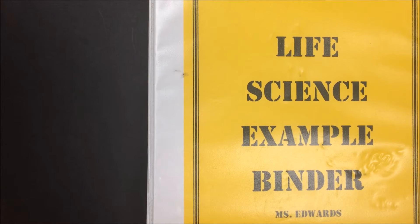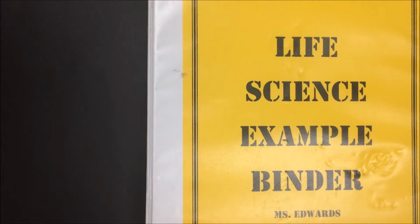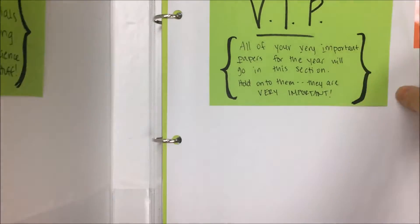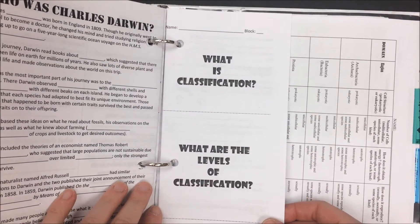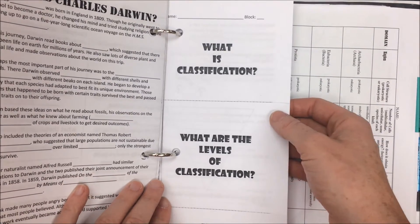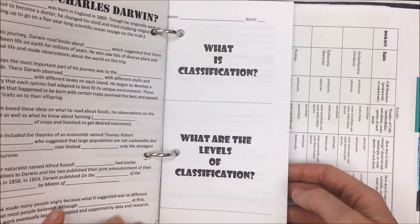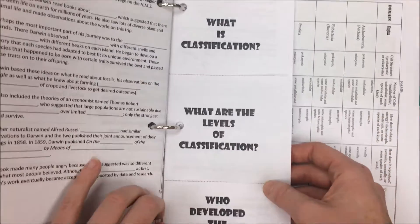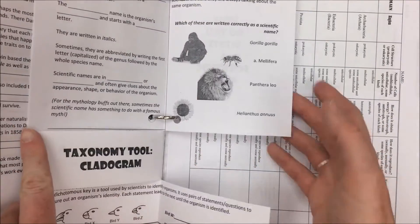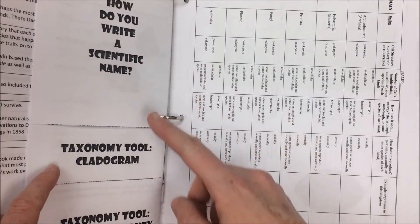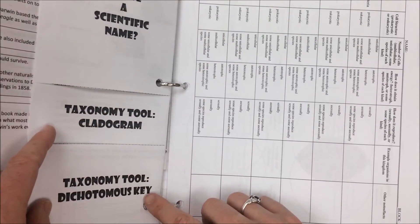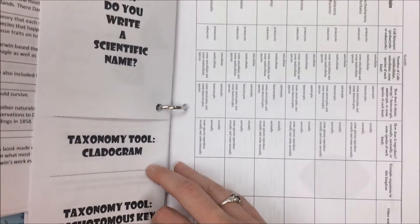Let's go over what you will need to study for your unit test on classification and taxonomy. We have two sets of notes for this unit. One is the foldable introducing classification and Carolus Linnaeus, as well as how to write a scientific name, how to use a cladogram, and how to use a dichotomous key.